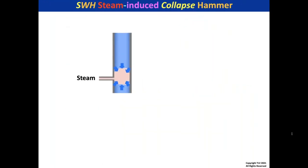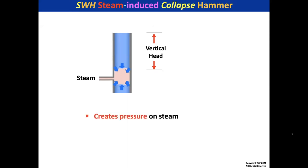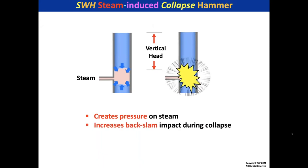Now let's look at a vertical line at the base of the riser. Flash steam comes in and makes a pocket right at the base of the riser. With 30 to 40 feet of vertical head, plus 25-pound back pressure in a return header, that creates a lot of pressure on that steam pocket. When that pressurized pocket collapses, it can create a tremendous back-slam impact. We mitigate trap damage by installing a check valve after the trap.